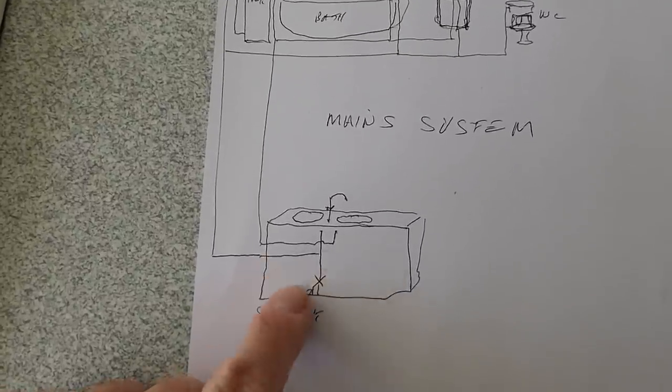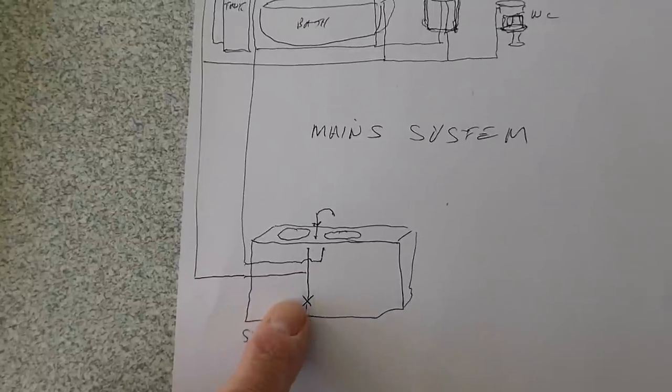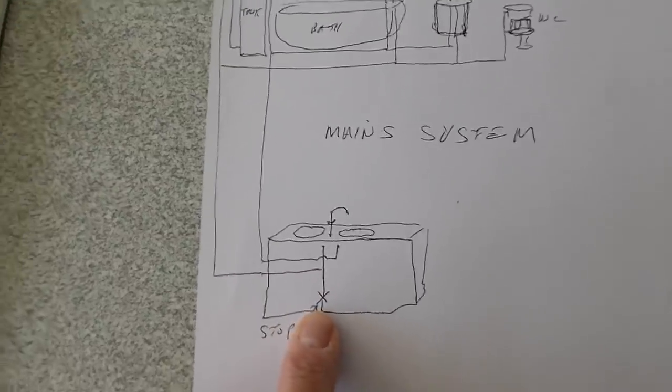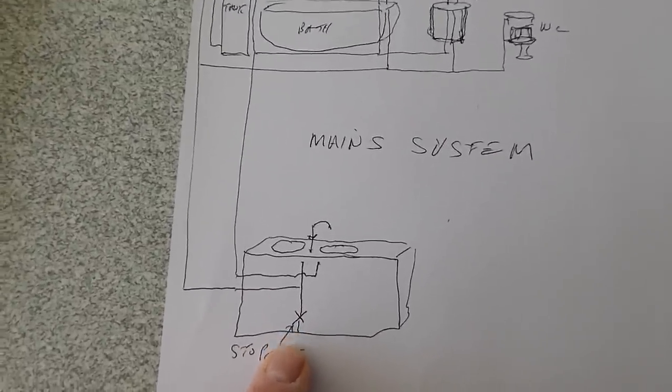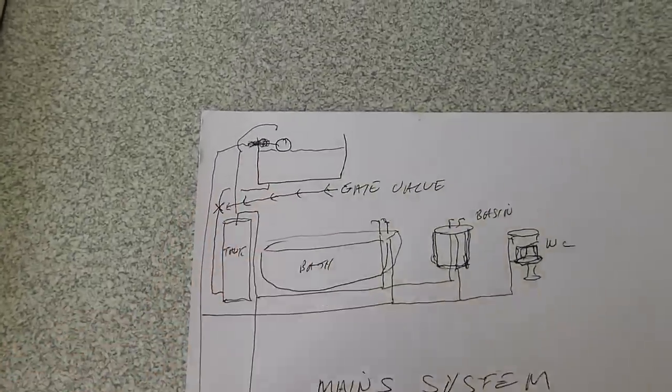Well, here we are, this is our kitchen sink unit anyway, or supposed to look like one. And the main stop cock is usually here, under the sink unit and it feeds across and goes up to our roof tank like so.